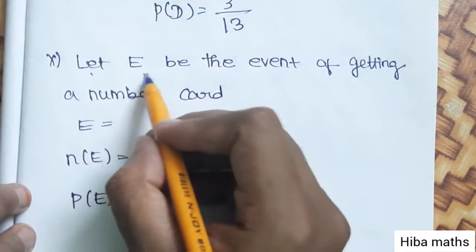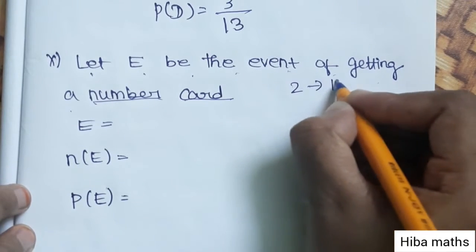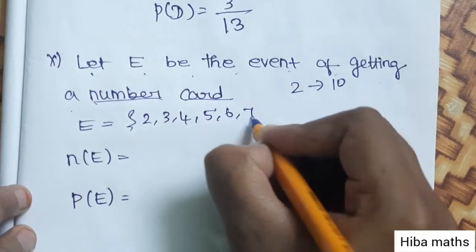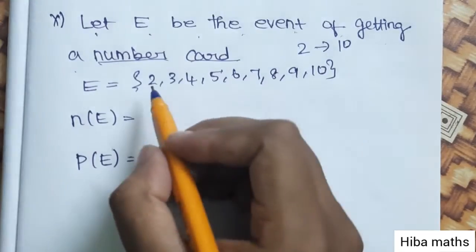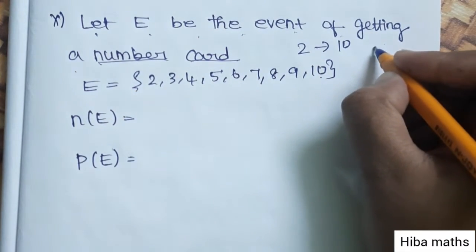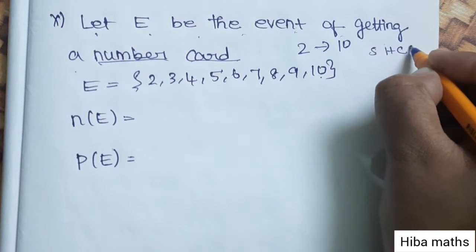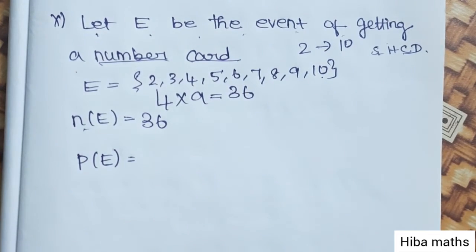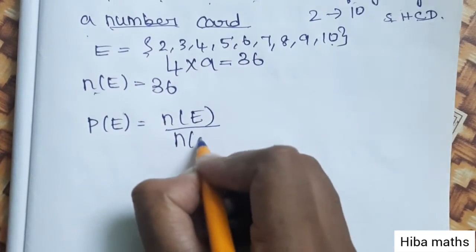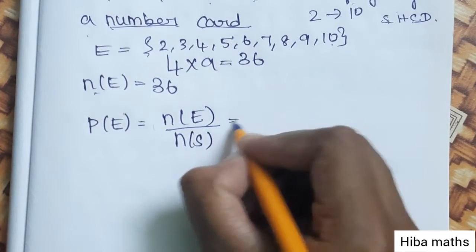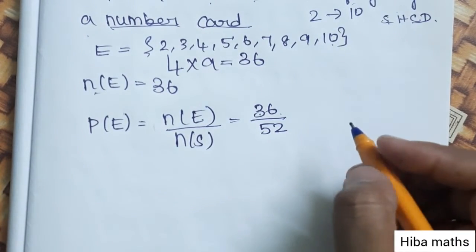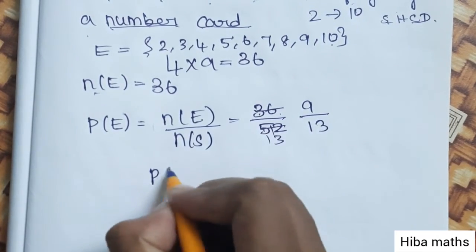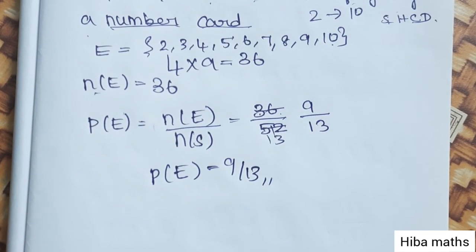Fifth subdivision: Let E be the event of getting a number card. Number cards are 2 through 10, so that is 9 number cards per suit. There are 4 suits — spade, heart, club, and diamond — so total number cards are 4 times 9 equals 36. N of E is 36. P of E equals 36 by 52, which simplifies to 9 by 13. Thank you so much for watching.